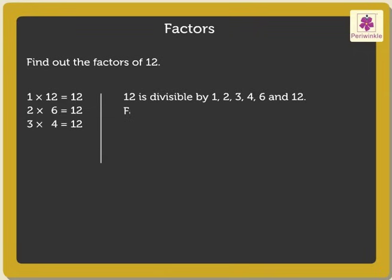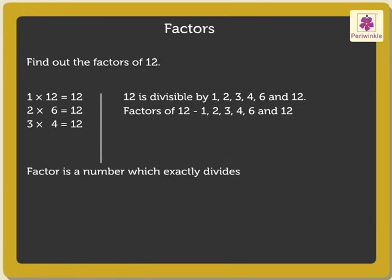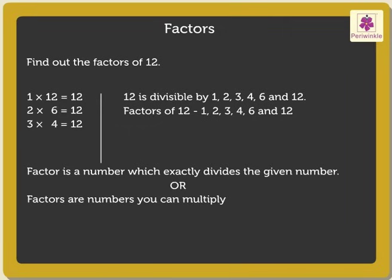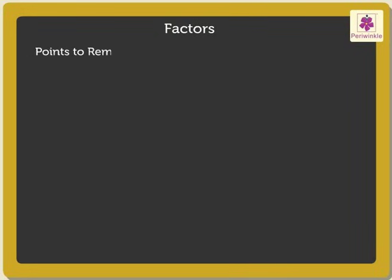Hence, we say that the numbers 1, 2, 3, 4, 6 and 12 are the factors of 12. Hence, we can define a factor of a number as a number which exactly divides the given number. Or, we can say that factors are numbers you can multiply together to get the given number. Now, let us look at certain points which we need to understand related to a factor with the help of some examples.